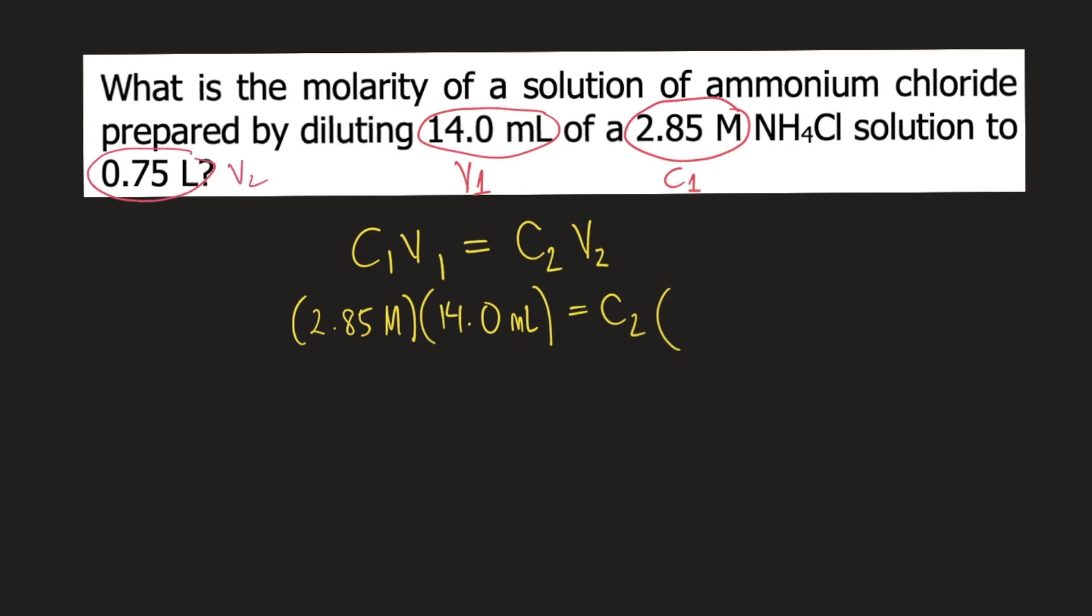But since I used mL for V1, make sure to convert 0.75 liters into mL. So let's do the conversion first: 0.75 liters times 1,000 mL per liter equals 750 mL. So you put 750 mL in the equation.